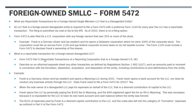What I'm going to talk about in this video is what are the reportable transactions for a foreign-owned disregarded LLC. If we look at Form 5472 in Part 5, there's a section for reportable transactions of a reporting corp that is a foreign-owned U.S. disregarded entity. Within that part, it makes the following statement: describe on an attached separate sheet any other transaction as defined in REG section 1.482-1(i)(7), such as amounts paid or received in connection with the formation, dissolution, acquisition, and disposition of the entity, including contributions to and distributions from the entity. What they are trying to do is create a definition so broad that almost every LLC that's a disregarded entity is going to have a reportable transaction.